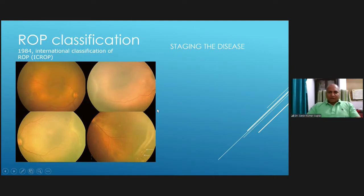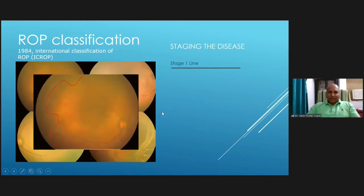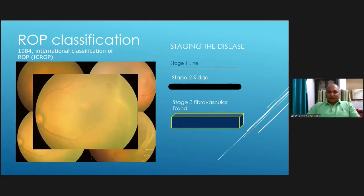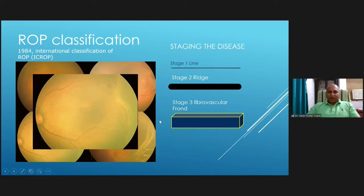Just to touch upon how we classify ROP — it's easy to remember, although a little complex. Stage one ROP is like a line, with a single dimension. Stage two becomes a ridge — two dimensions, so it's thicker than the thin line of stage one. Stage three has a fibrovascular frond — the proliferative tissue changes from two dimensions to three dimensions as it rises up.